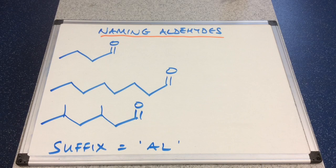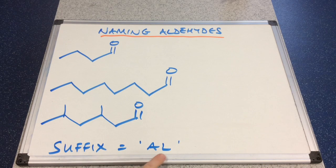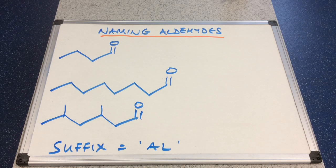So there are three for you to try. The suffix for aldehydes is '-al', so in other words their names end in '-al'. Have a go at these and then I'll go through the answers.